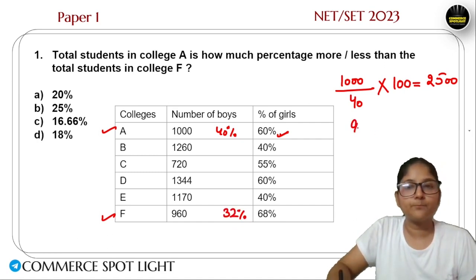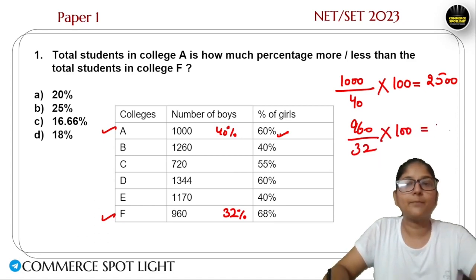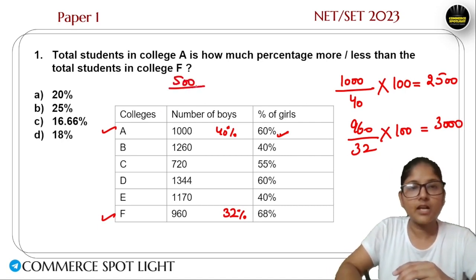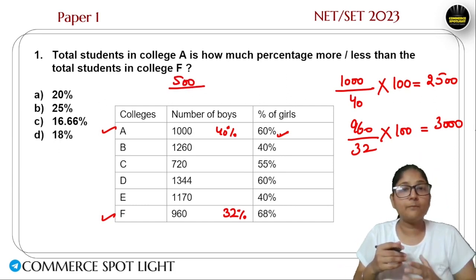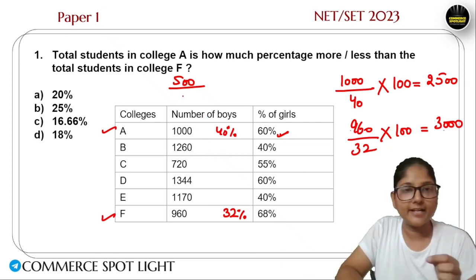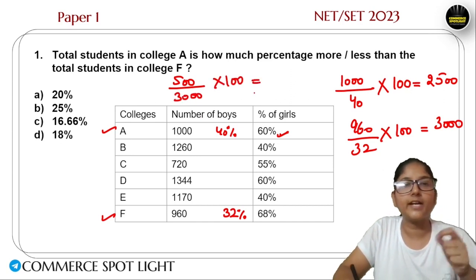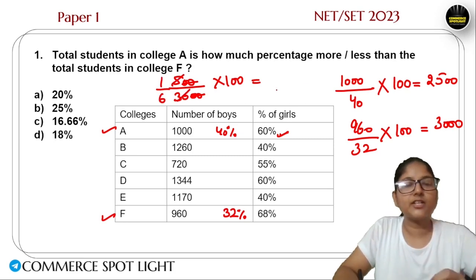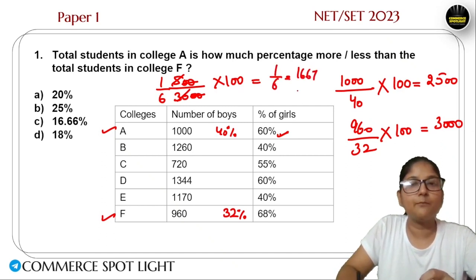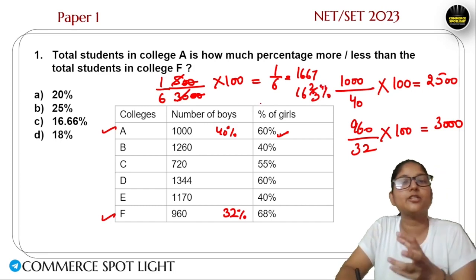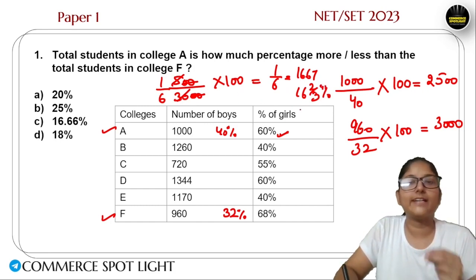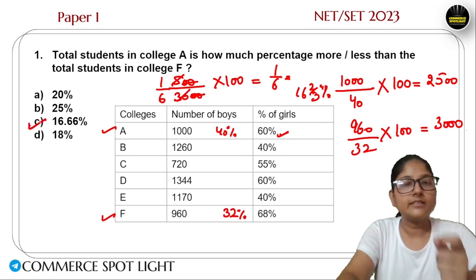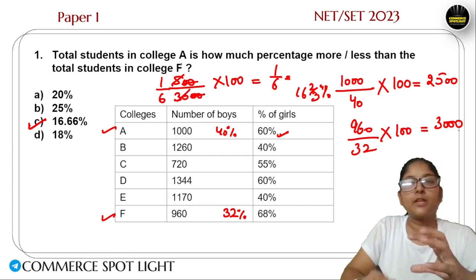For College F, boys are 32% and their value is 960. So total equals 960 divided by 32 multiplied by 100, which gives 3000. How much difference between College A and College F students? 3000 minus 2500 gives 500. Now to express this as a percentage: 500 divided by 3000, which simplifies to 1/6. Converting to percentage: 1/6 multiplied by 100 equals 16.67%. So option C is correct.